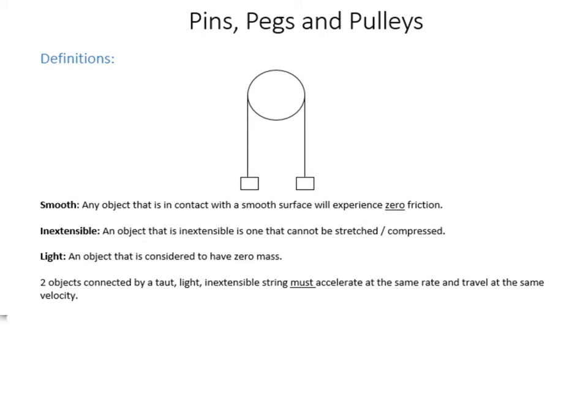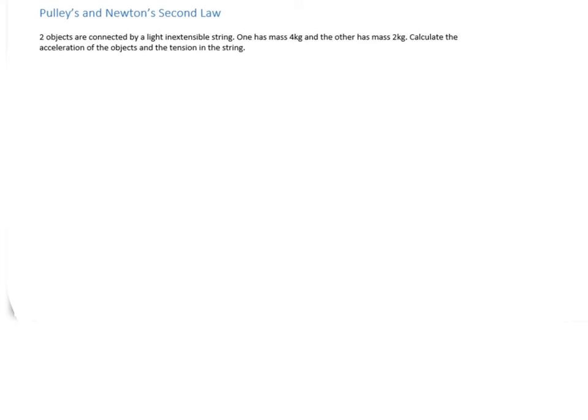Let's look at a first simple example. We've got two objects connected by a light inextensible string. One has mass 4 kilograms and the other has mass 2 kilograms. Calculate their acceleration and the tension in the string. As always let's start with a diagram. I am still using the highlighting tool.